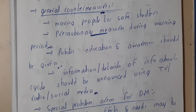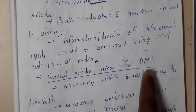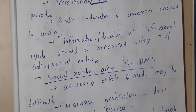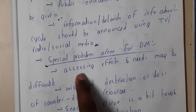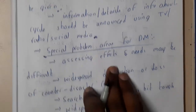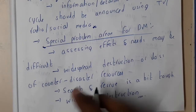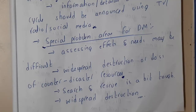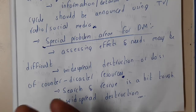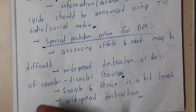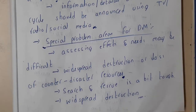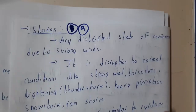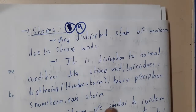Special problem areas in disaster management: assessing the effect and needs can be difficult. There can be widespread destruction and loss of disaster response resources. Searching and rescuing is tough because a cyclone moves from place to place — we cannot prioritize a single location. Destruction is not limited to one place; an entire city can be destroyed by a single cyclone.